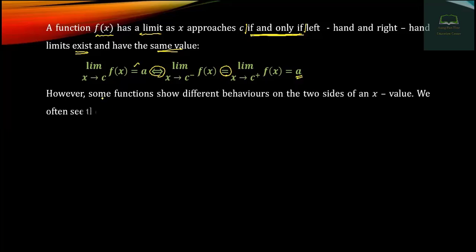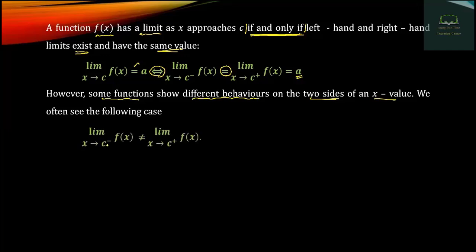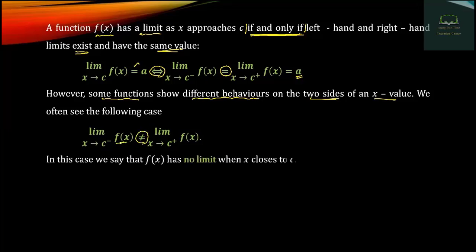The first thing we have to do is show different behavior from each other on the two sides. If the left-hand limit and right-hand limit are not equal, then the limit does not exist. The limit has no limit under these conditions. Here, close to c, we have seen a limit that goes to the left side differently.